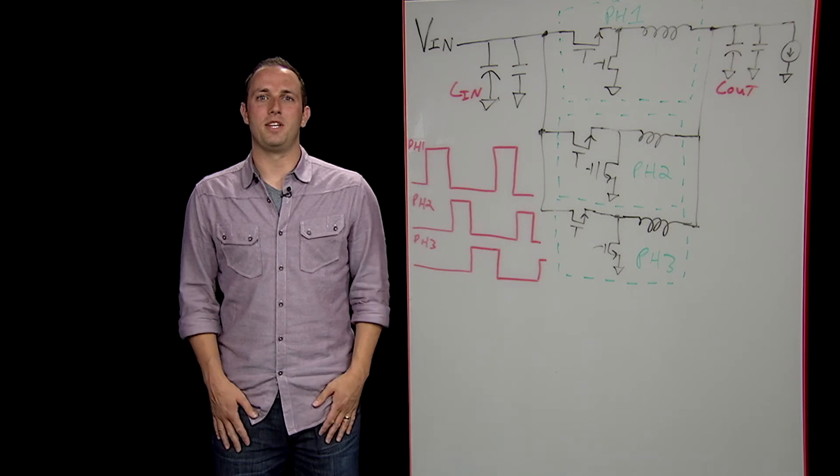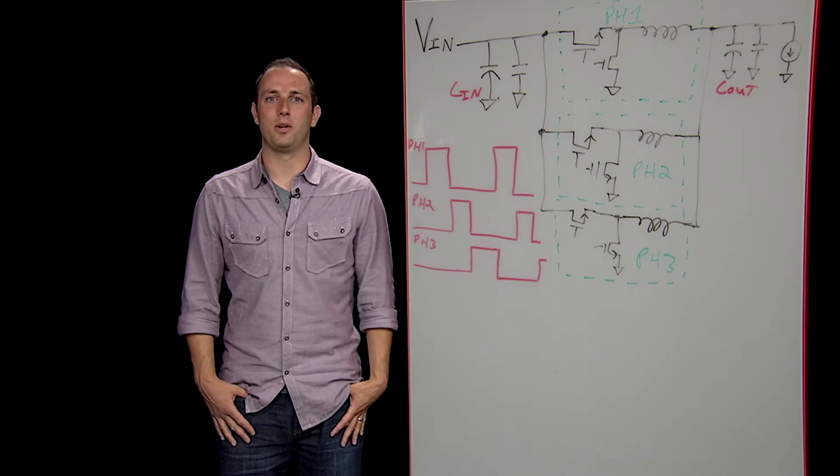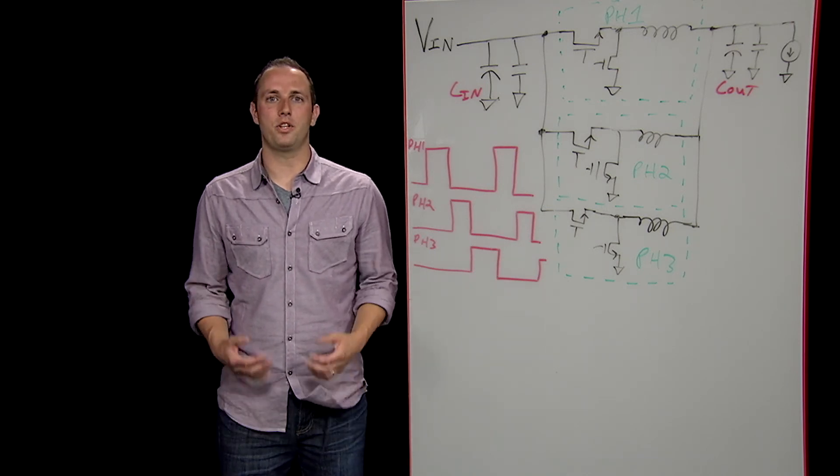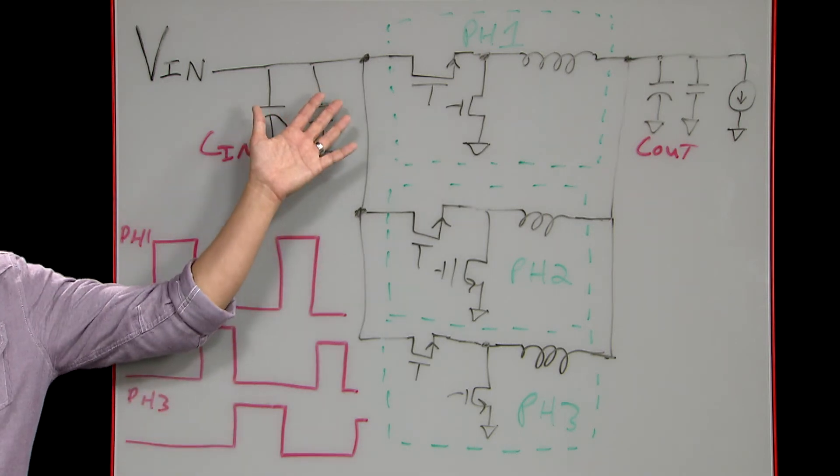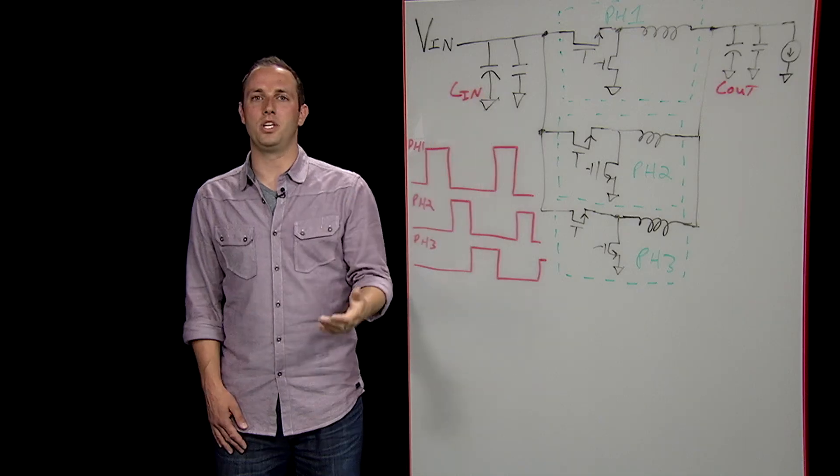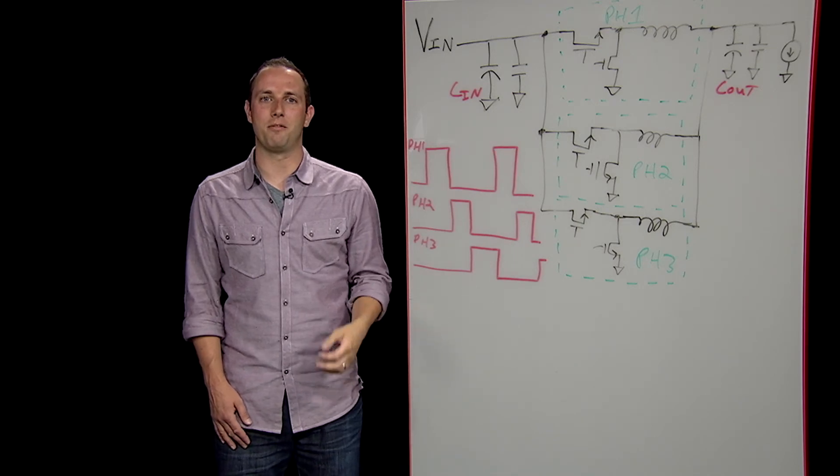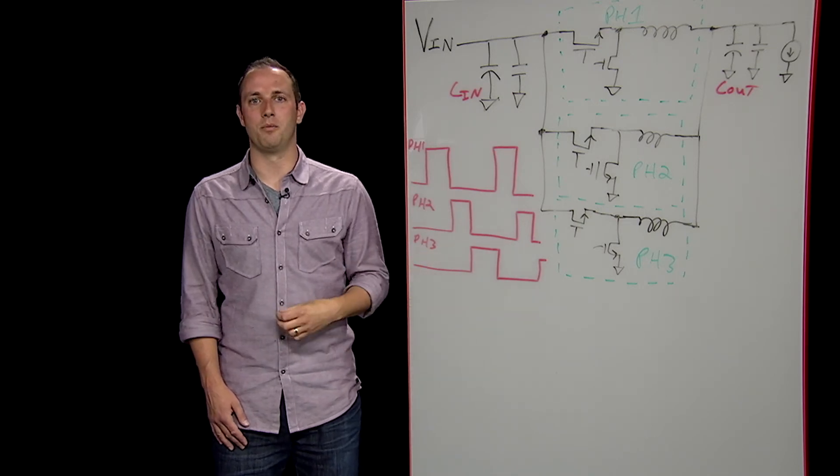The last big advantage multi-phase bucks have over their single-phase counterparts is improved transient response. During a transient event, the multi-phase controller can overlap active phases during a load step or turn all the phases off during a load release. This effectively puts the inductors of all the phases in parallel with one another, reducing the equivalent inductance seen by the output by a factor of n where n is the total number of phases.